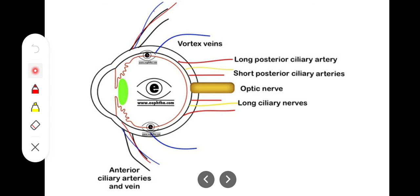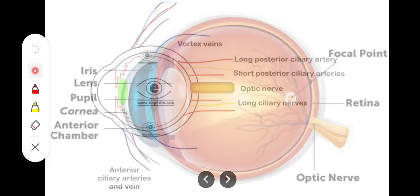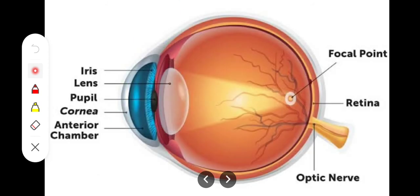With this we are done with the sclera — the white of the eye. The next structure is the cornea. The very peripheral white portion of the eye is the sclera, while the middle black of the eye is the cornea. The cornea is totally transparent and lies over the iris.